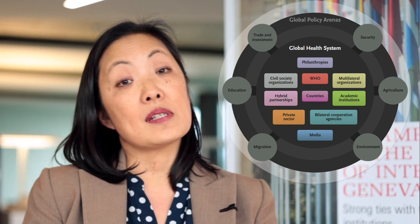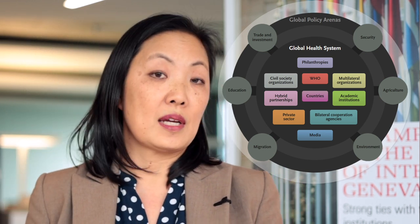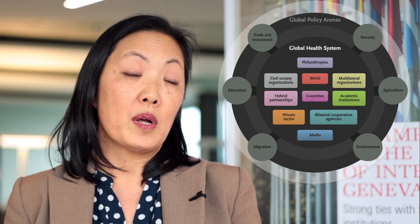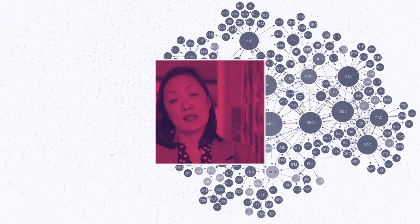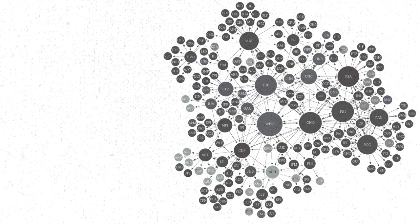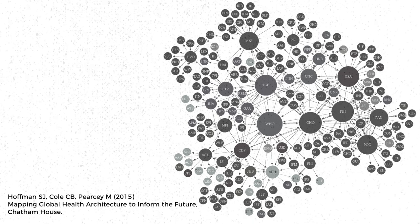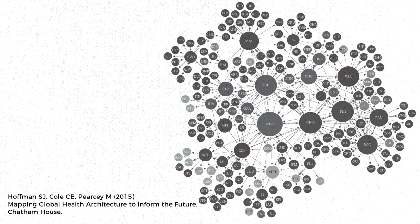Finally, we have civil society organizations — both large international NGOs and smaller advocacy organizations based at the national or global level. When scholars have tried to map what the global health system actually looks like, you can see that it's hundreds, if not thousands, of actors — very, very complex networks — all interconnected and interacting with each other.